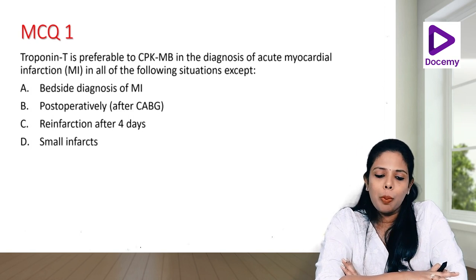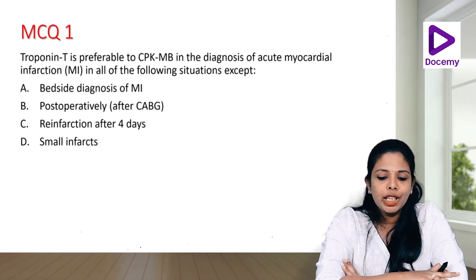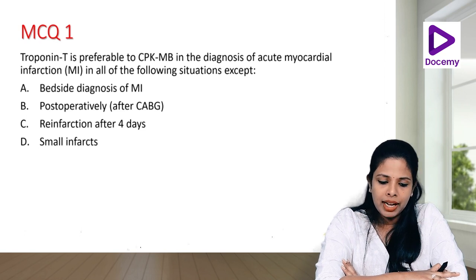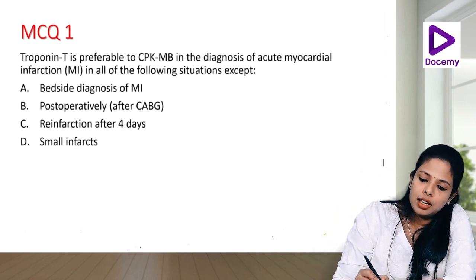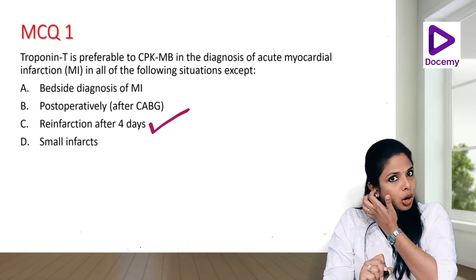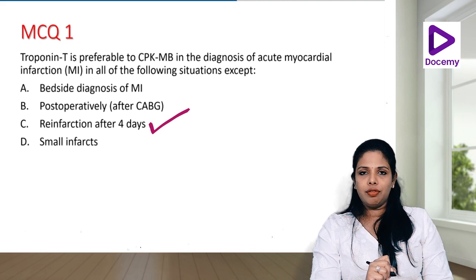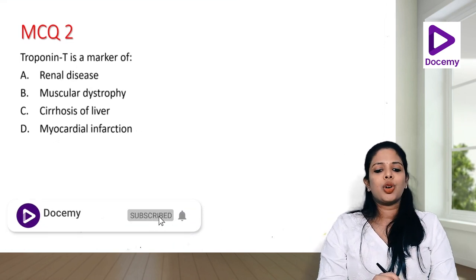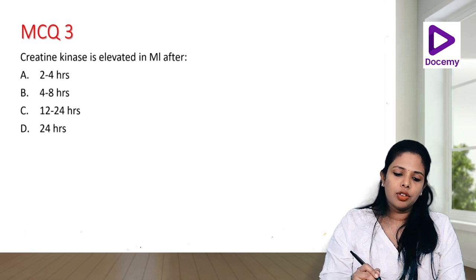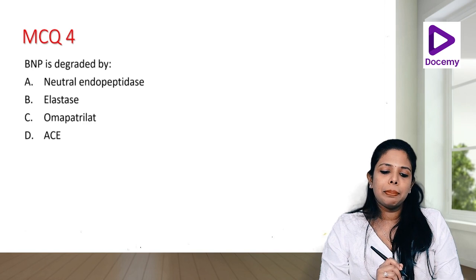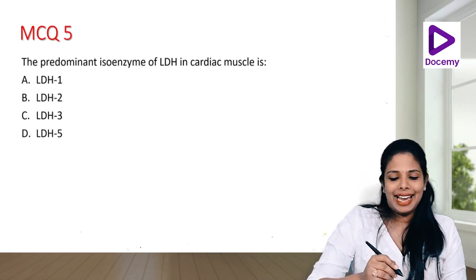Coming to the MCQs. MCQ 1: Troponin-T is preferable to CPK-MB in the diagnosis of acute MI in all of the following situations EXCEPT: (A) bedside diagnosis of MI, (B) postoperatively after CABG, (C) re-infarction after four days, (D) small infarction. The answer is C — CPK-MB returns to normal within two to three days, hence a re-infarction after four days can only be detected by CPK-MB, as troponins remain elevated for seven to ten days. MCQ 2: Troponin-T is a marker of myocardial infarction. MCQ 3: Creatine kinase is elevated in MI after four to eight hours. MCQ 4: BNP is degraded by neutral endopeptidases. MCQ 5: The predominant isoenzyme of LDH in cardiac muscle is LDH1.